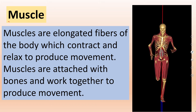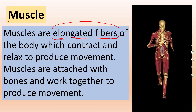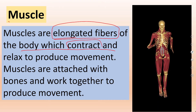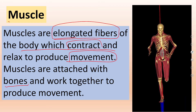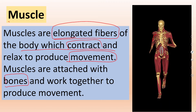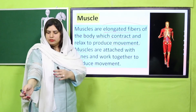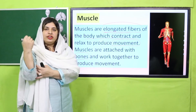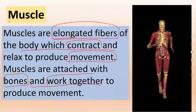Next is muscles. Muscles are elongated fibers of the body which contract and relax, helping us in movement. Muscles are attached to bones. Our whole skeleton has muscles attached to it. Muscles contract and relax — you can demonstrate this activity by asking students to bend their arm and relax it. This is muscle contraction and relaxation, which is why our body moves. Muscles work together with bones to create movement inside our body.